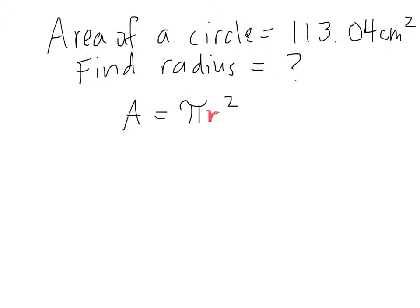In our formula for a circle, we have two variables that are unknown. We have A, which represents the area, and we have r, which represents the radius.